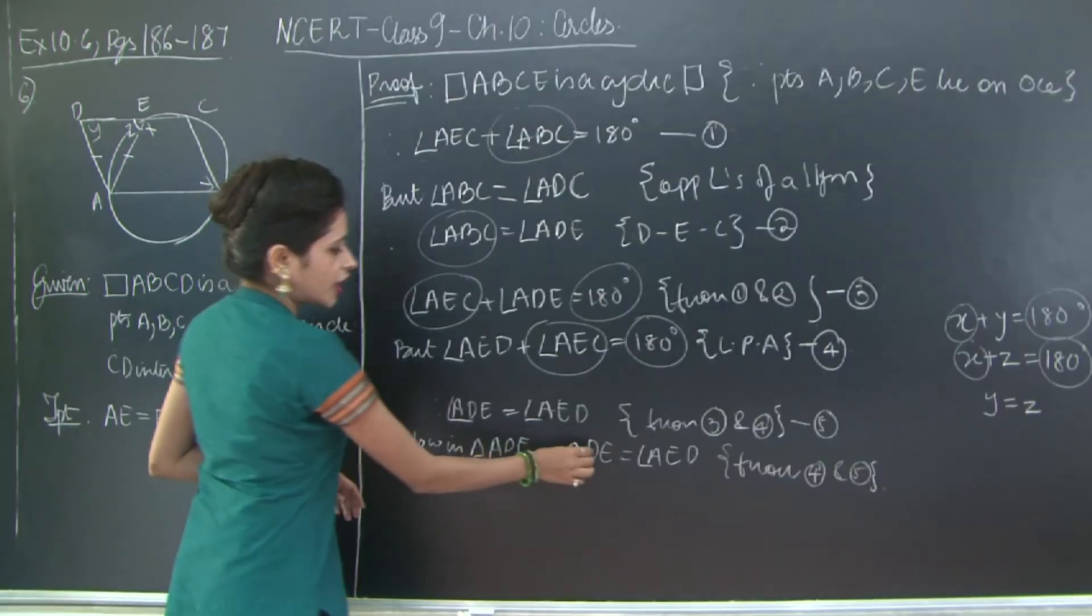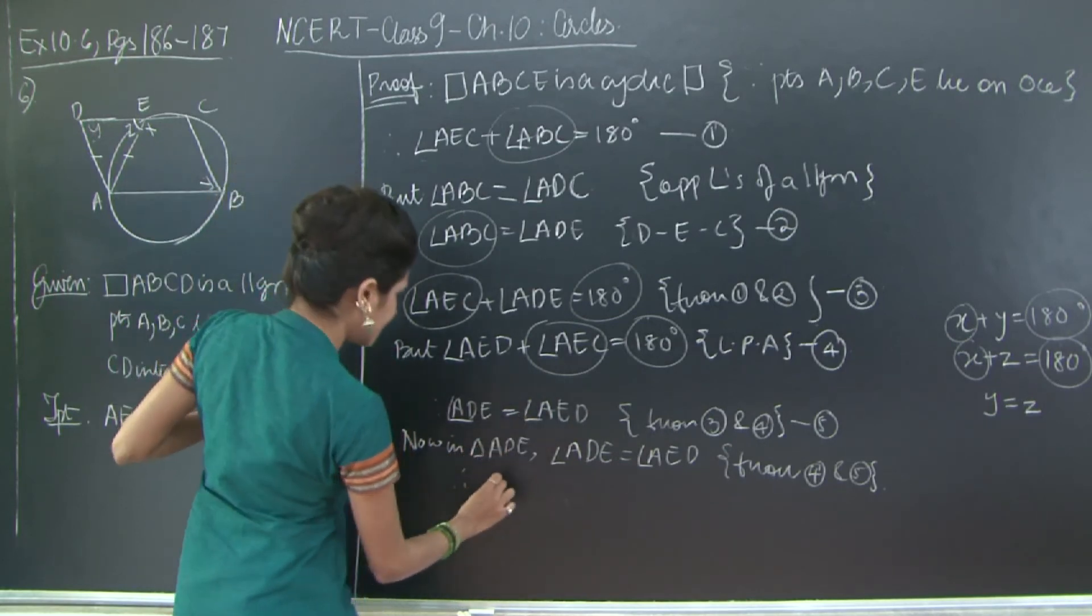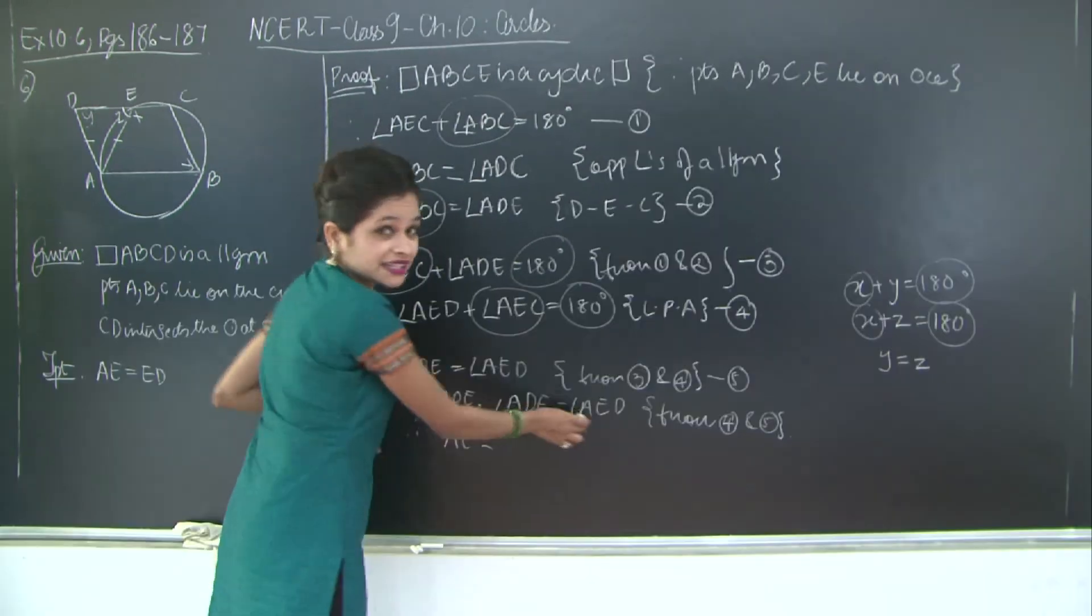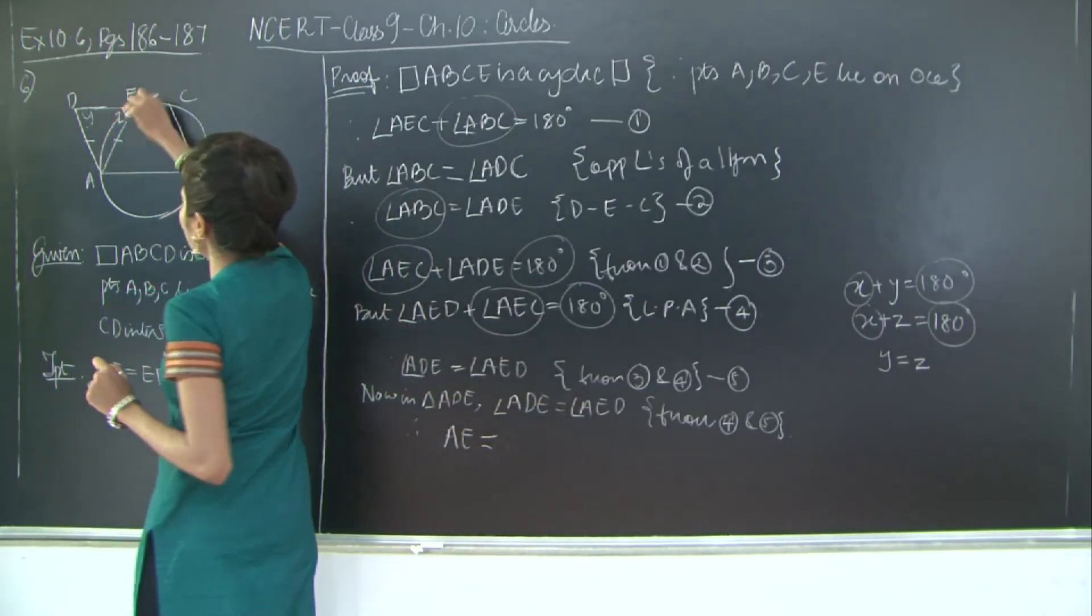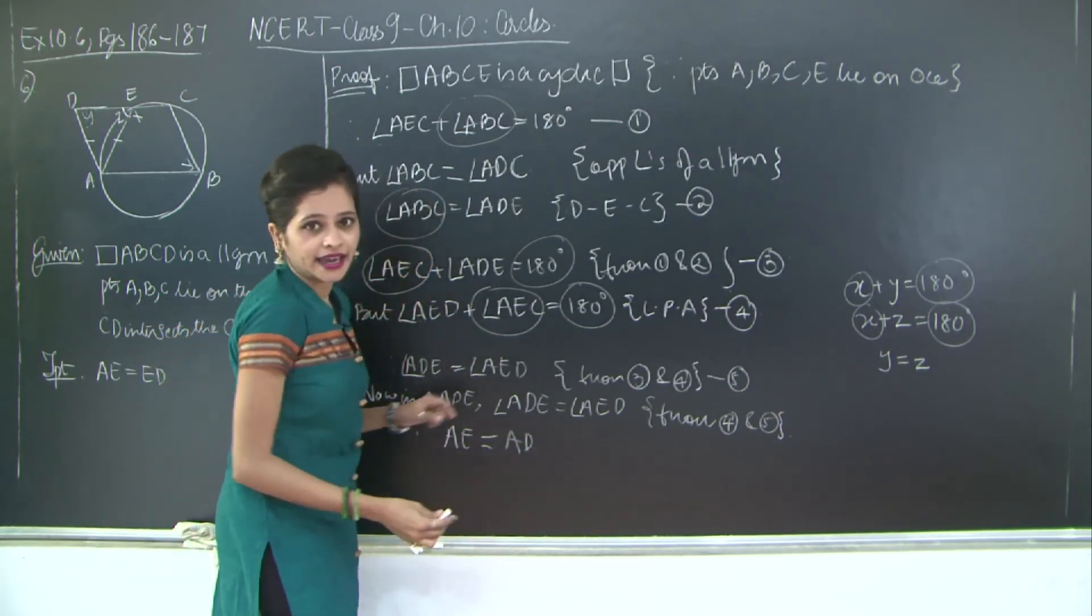Correct? So now the side opposite ADE, that is the side opposite angle y, is AE, is equal to the side opposite angle AED. So side opposite angle AED is side AD. So AE is equal to AD, hence proved.